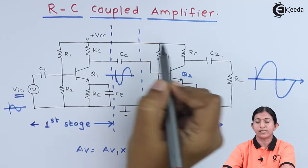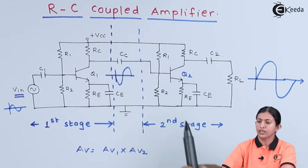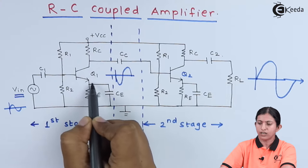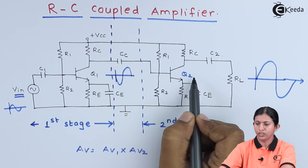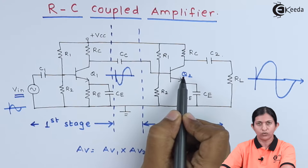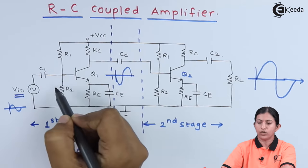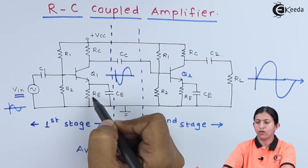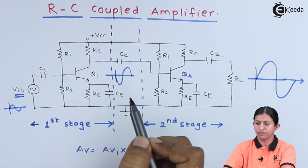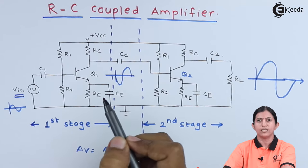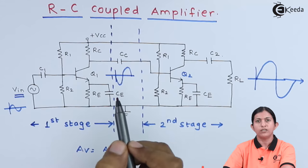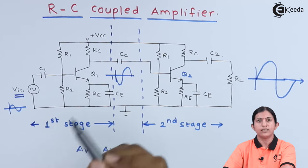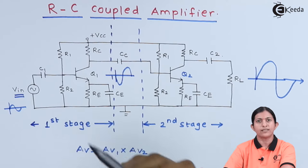So first we will study the RC coupled amplifier. Here we are using two stages, transistor Q1 and transistor Q2. To transistor Q1 and Q2, we are applying voltage divider biasing. R1, R2, and RE form the voltage divider biasing. Voltage divider biasing is necessary to keep the Q point exactly at the center of the load line so that these transistors will operate as an amplifier.